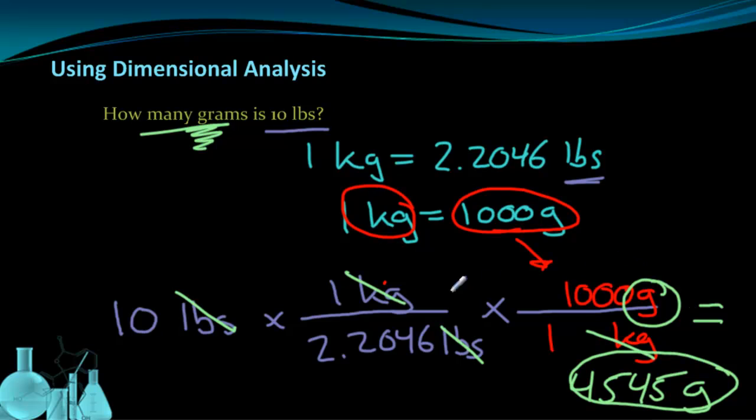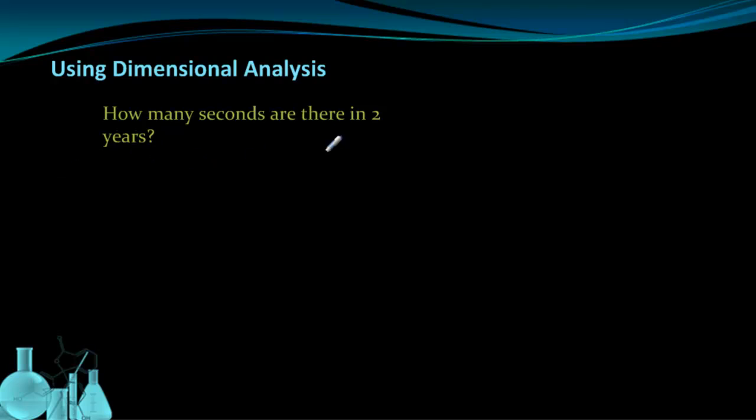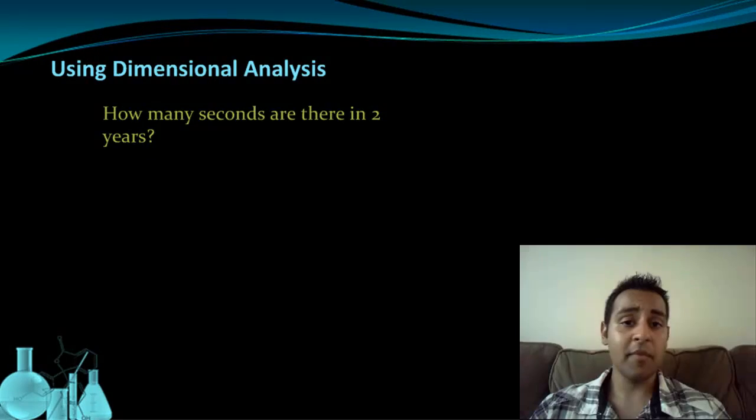Now, in this example, we chain 2 conversion factors together because we have to change the unit more than once. You can put as many conversion factors in a row as you need as we'll see in this next example. Here we have one where you don't even need to use a chart. How many seconds are there in two years? I'm going to pause the video here to give you a chance to work through this problem first. Once you're ready to move ahead, click play and you'll be able to see the solution.